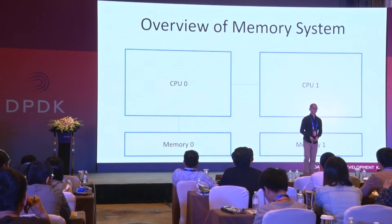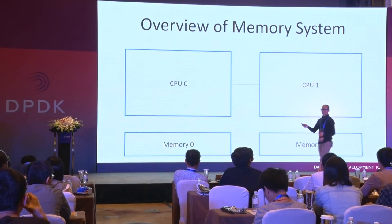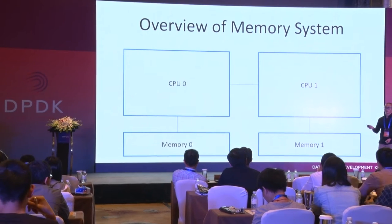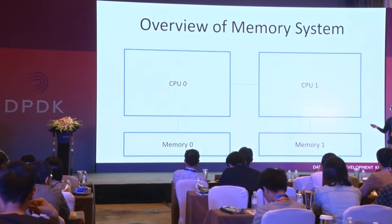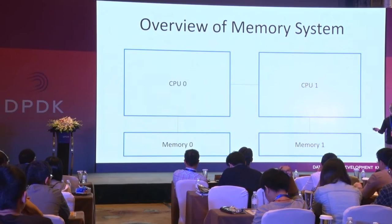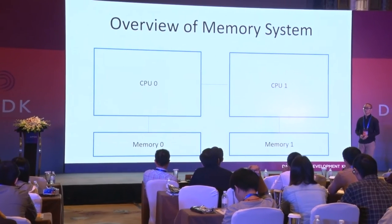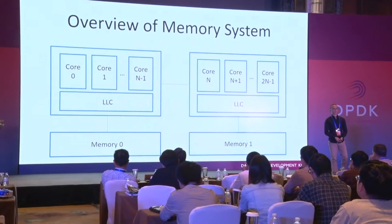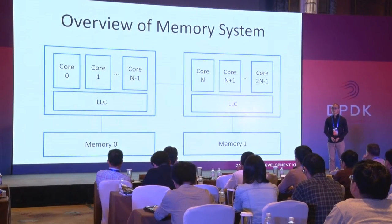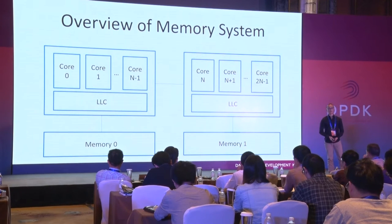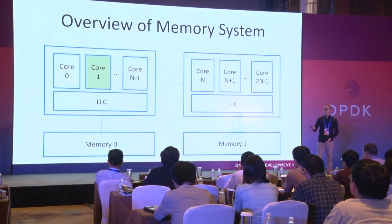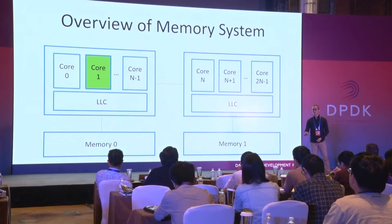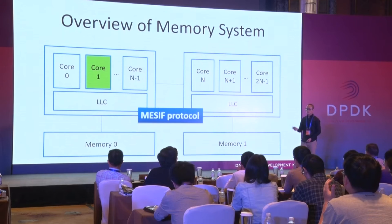We can give a quick introduction on the overview of the memory system. This is the traditional dual CPU server. There are two memories and two CPUs. Each CPU correlated to one memory. On every CPU, there are several cores. There is also one shared cache. If one of the CPUs needs to receive data, how does it operate?